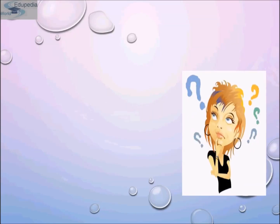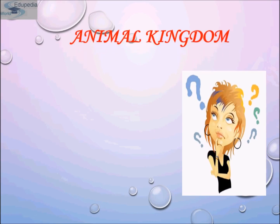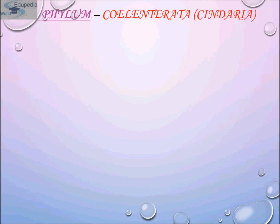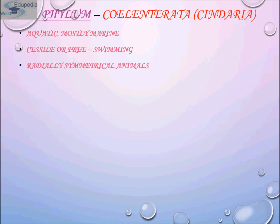Hello students, my name is Neer. Thanks for watching Edupedia World videos. In this tutorial we will continue to discuss about the third section of the animal kingdom, that is Phylum Cnidaria or Coelentrata. Cnidarians are incredibly diverse in form, as evidenced by colonial siphonophores, massive medusae, corals, feathery hydroids, and box jellies with complex eyes. Yet these diverse animals are all armed with stinging cells called nematocysts.